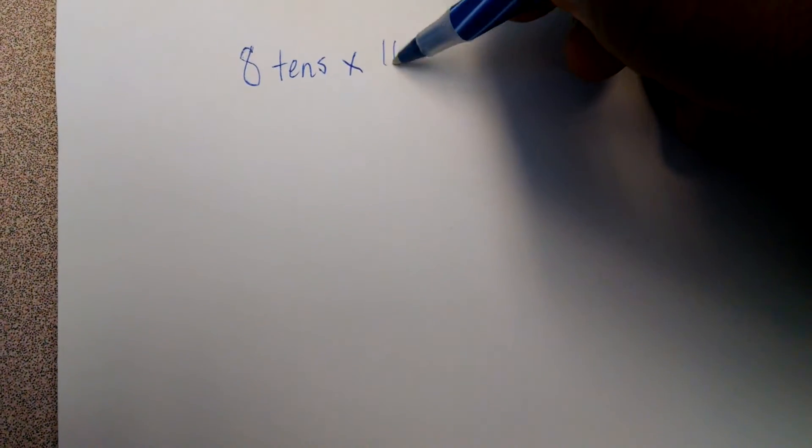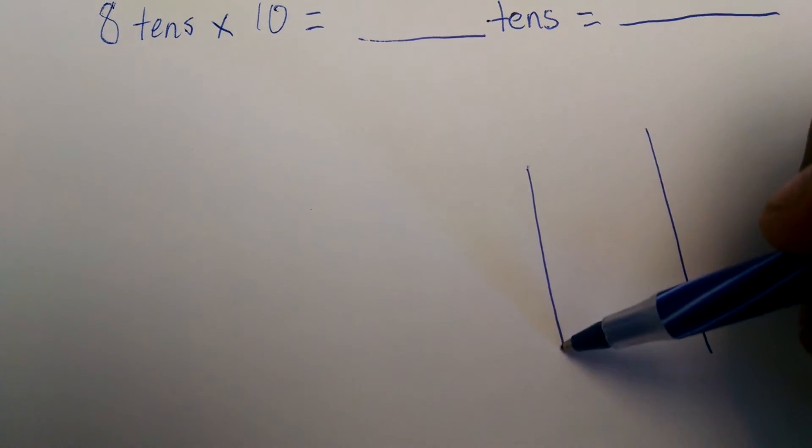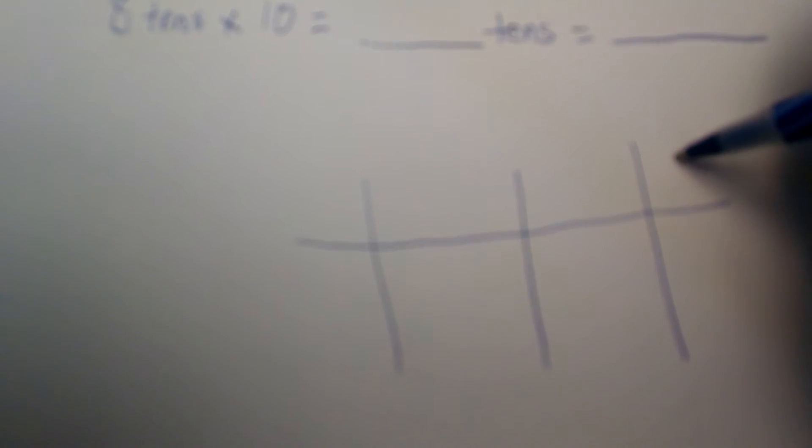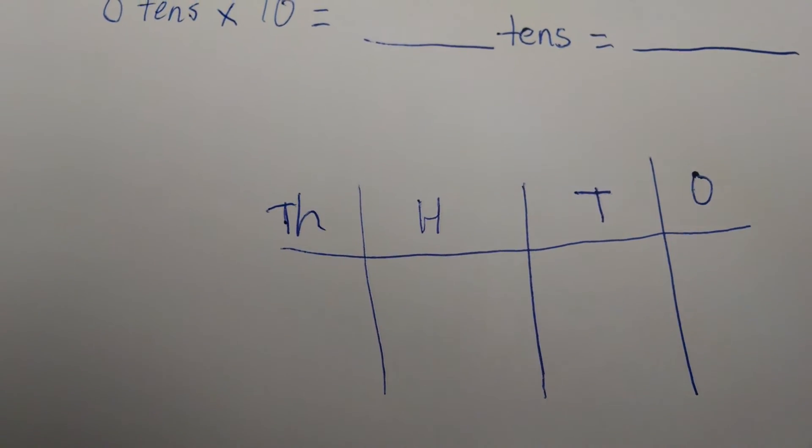And this concept is applied to all the places. So if I—let's start it with—let's use 8 tens times 10 equals blank tens, which equals blank. So I'll set up my chart. Ones, tens, hundreds, thousands. Very important to set up a chart so that you familiarize yourself with the different places.